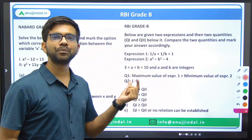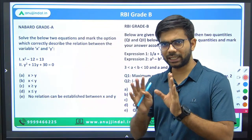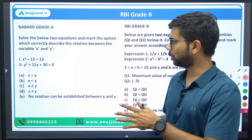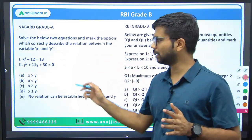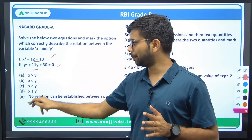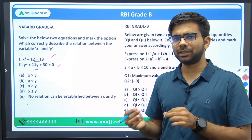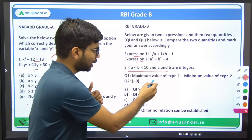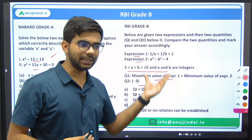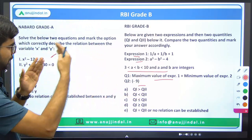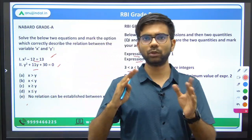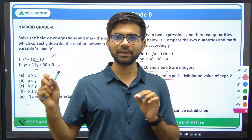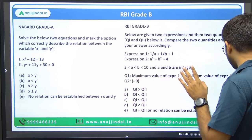Both questions are from the topic of quadratic equations. The NABARD question is relatively easier — two equations are given and you compare their roots with an additional condition or clause. But in the RBI Grade B question, there are equations with conditions given, and further you are given two quantities to compare, making the question much lengthier and more difficult. Clearly, NABARD Grade's level is much lower than RBI Grade B level in Quant.